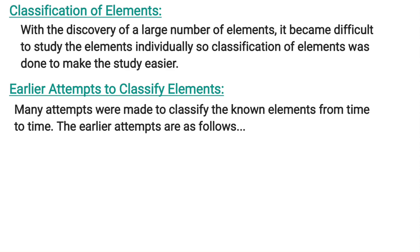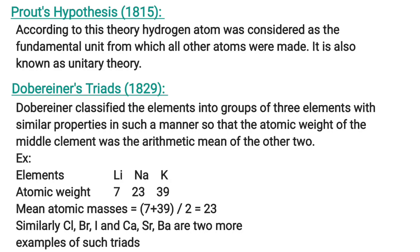Let us consider a few attempts that were made in the earlier days to classify the elements. Such an attempt was made by scientist Prout. According to his hypothesis, he considers the hydrogen atom as the fundamental unit, and based on hydrogen, all the atoms were made. This is known as Prout's unitary theory.